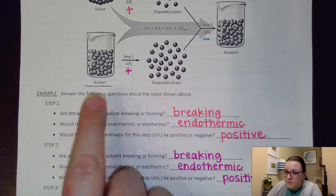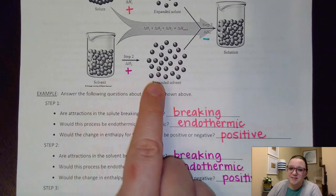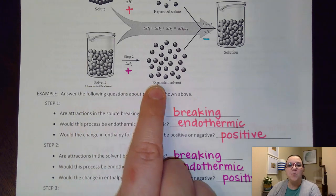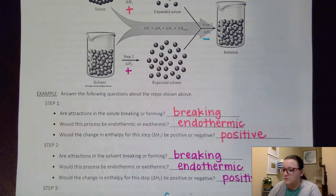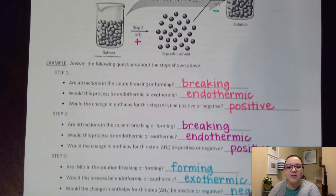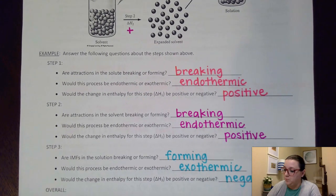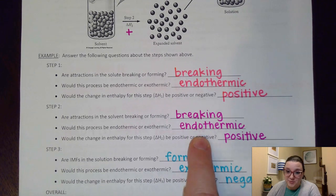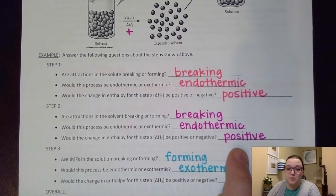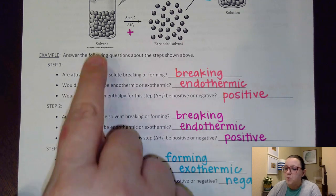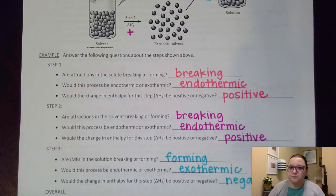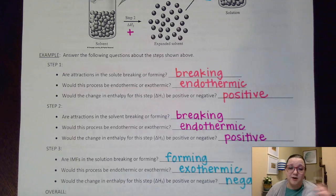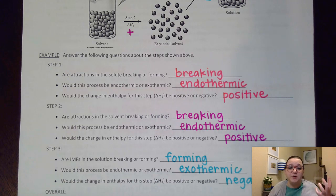The solvent too needs to separate apart, and so we notice some similar answers for that step. The attractions on that step would be breaking, it would be endothermic, and so my delta H value would be positive. By the way, most of the time our solvent is water, and so more than likely we are breaking the IMFs that were present there — the hydrogen bonding, the London dispersion, and the dipole-dipole forces would all need to be broken.